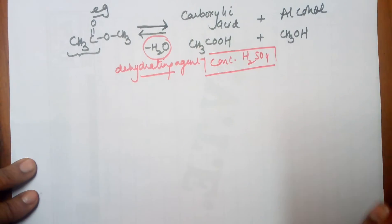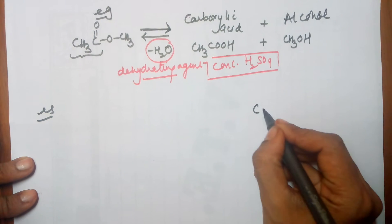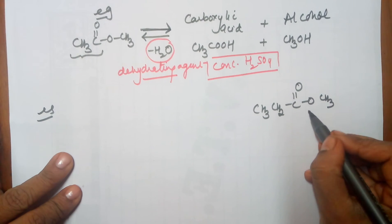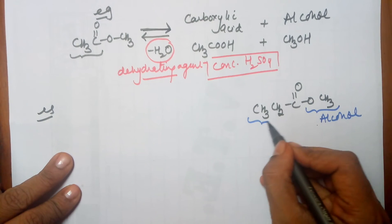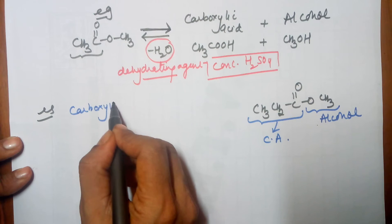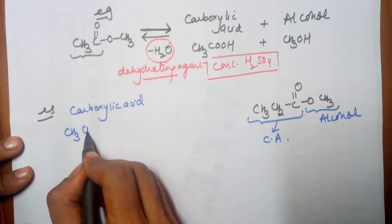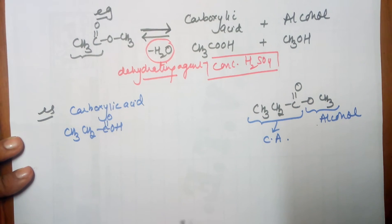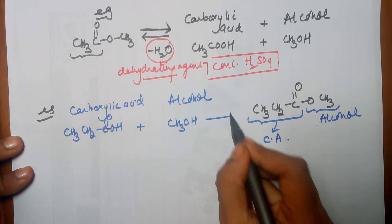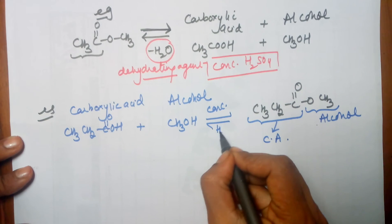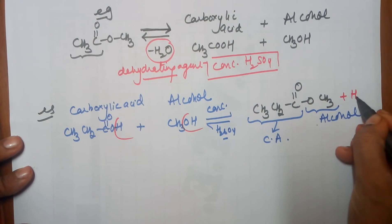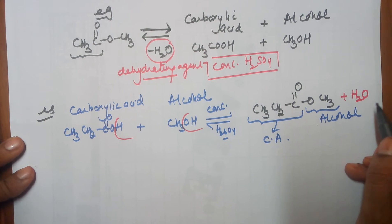Let's take another example. I want the ester CH₃CH₂COOCH₃ to be prepared. We very well know this part of the ester comes from the alcohol — the oxygen side. This part, three carbons, comes from carboxylic acid. So the carboxylic acid you are going to use should have 1, 2, and 3 carbons — that's the carboxylic acid required. The alcohol you want is only one carbon, so it is methanol. You will add the two; it's a reversible reaction. You will write concentrated sulfuric acid here, which will help you remove the water molecule. Hence the byproduct in the reaction is water. Always during esterification the byproduct is going to be a water molecule.